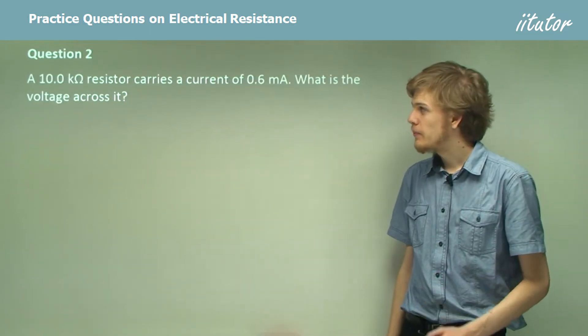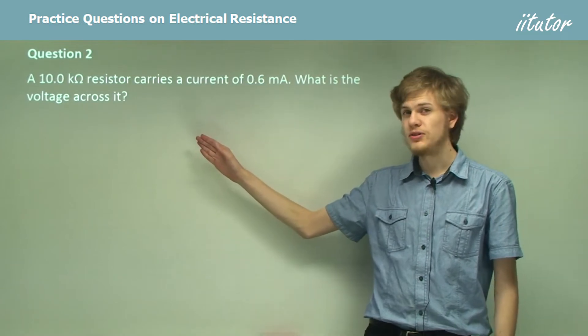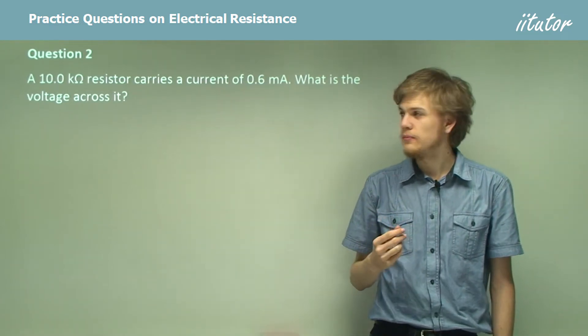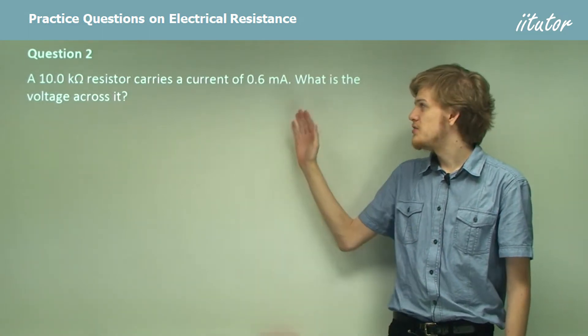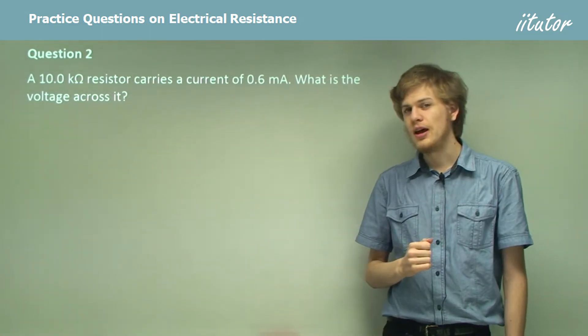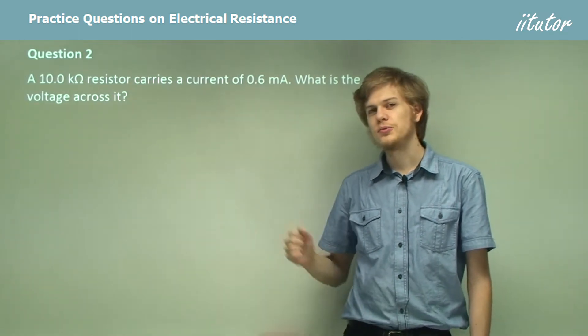Question 2. A 10 kilo ohm resistor, that is 10,000 ohms, carries a current of 0.6 milliamps, that's 0.6 thousandths of an amp. What is the voltage across the resistor?